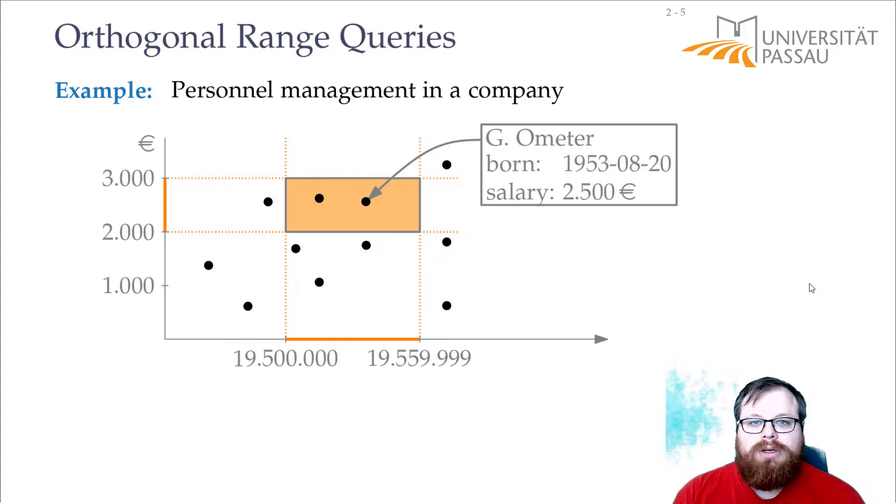So the people you want to find lie in this box and this is the query you want to do. You want to find exactly these people and in geometry we just model it as the intersection of these bounded regions.